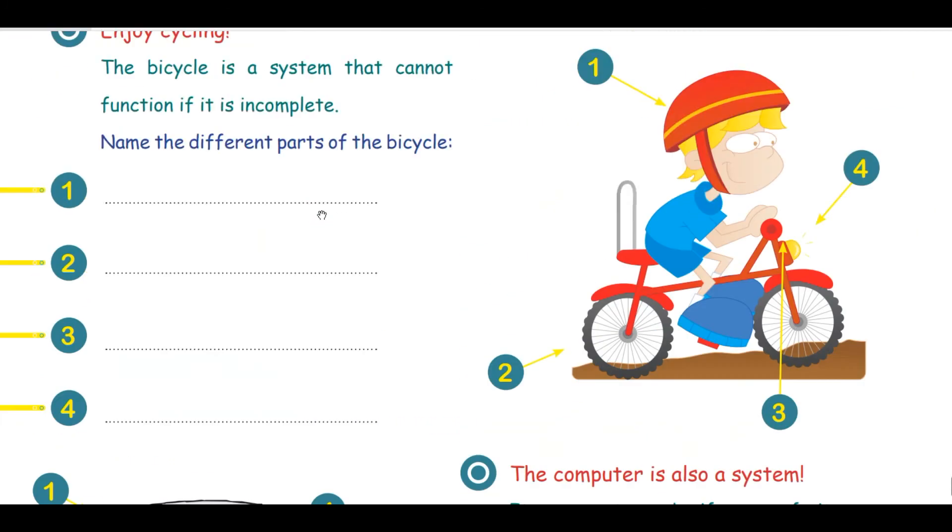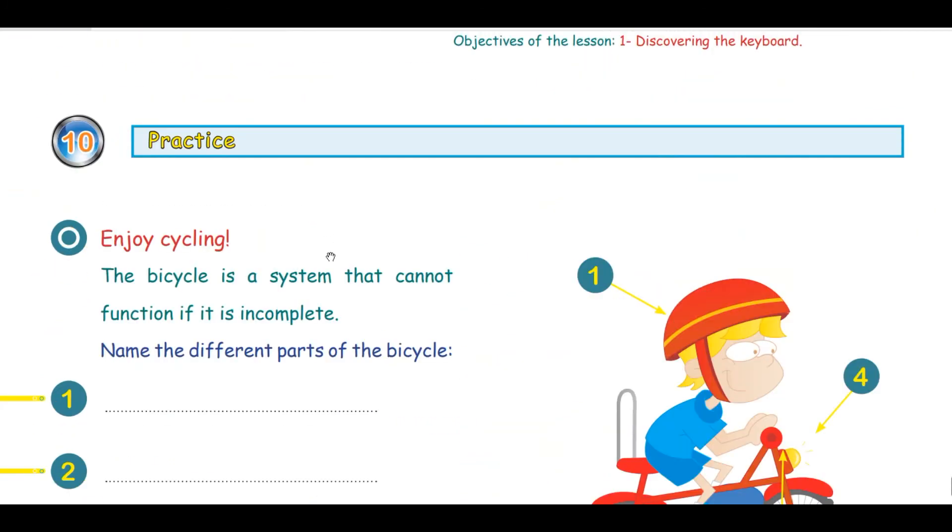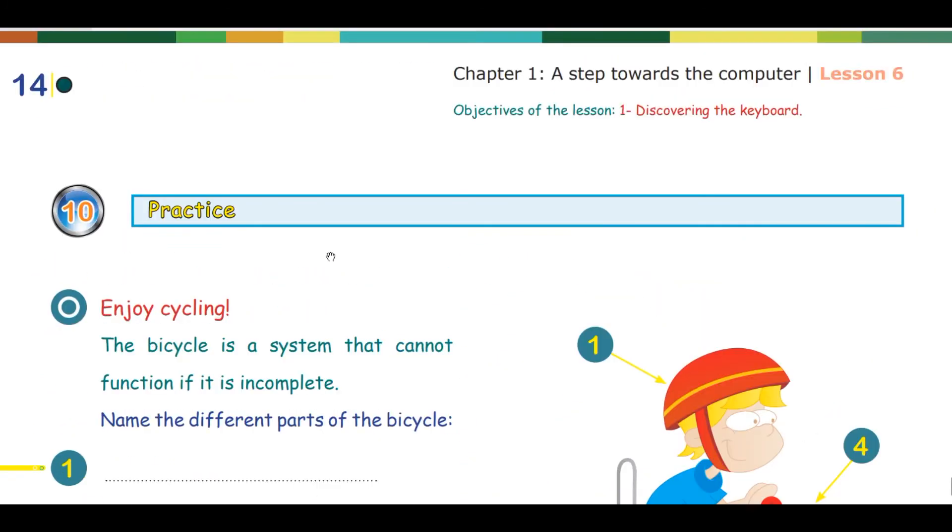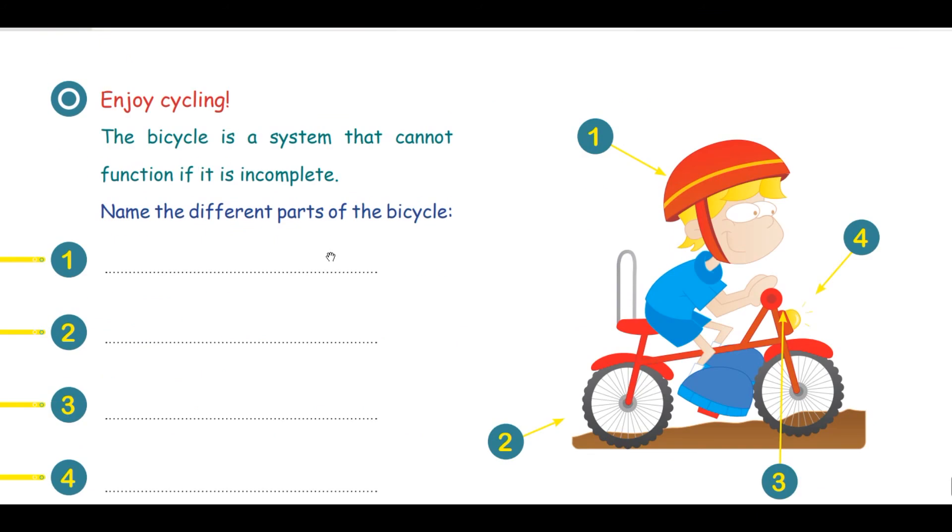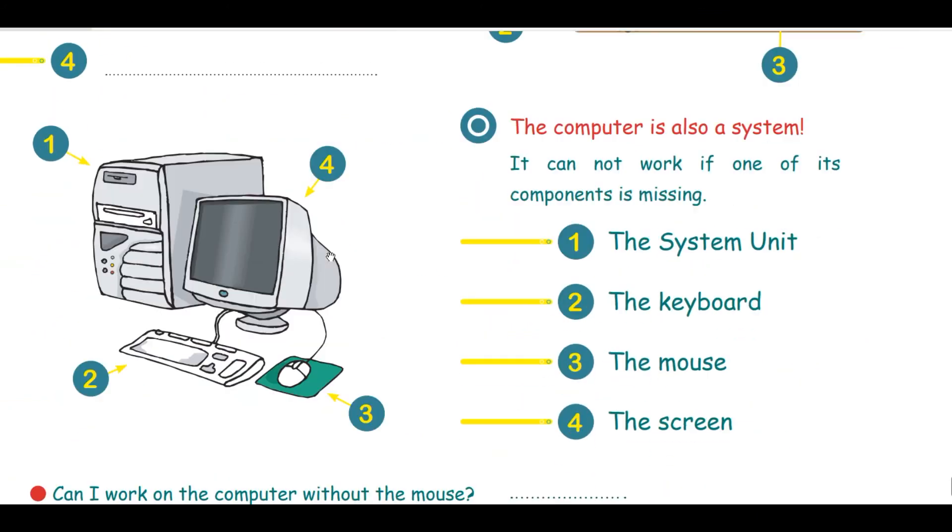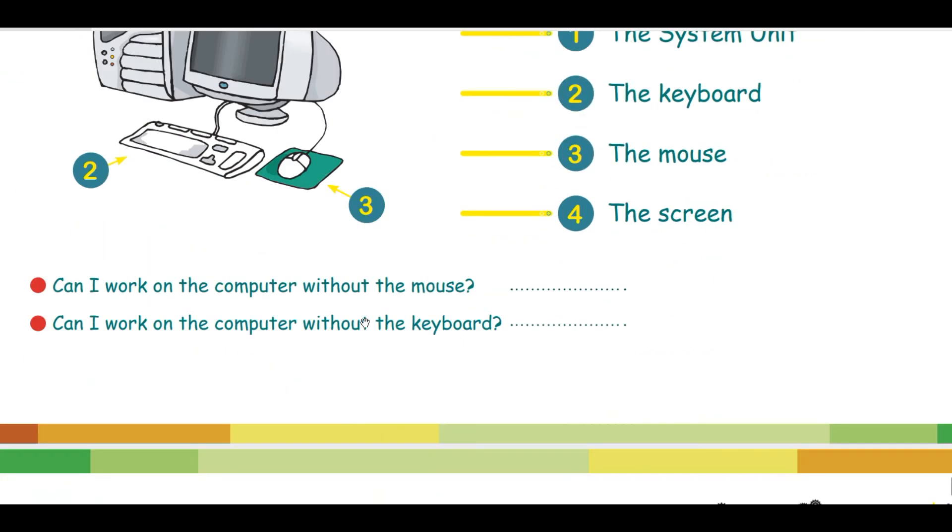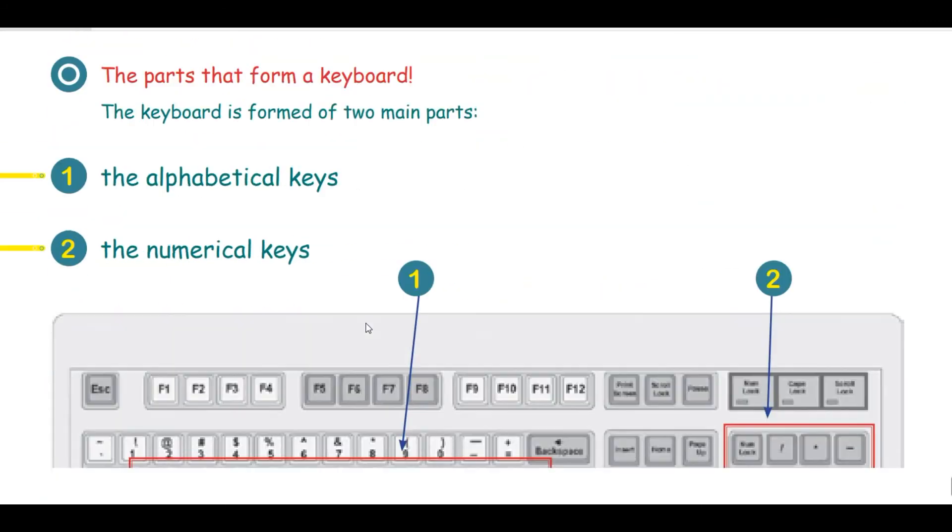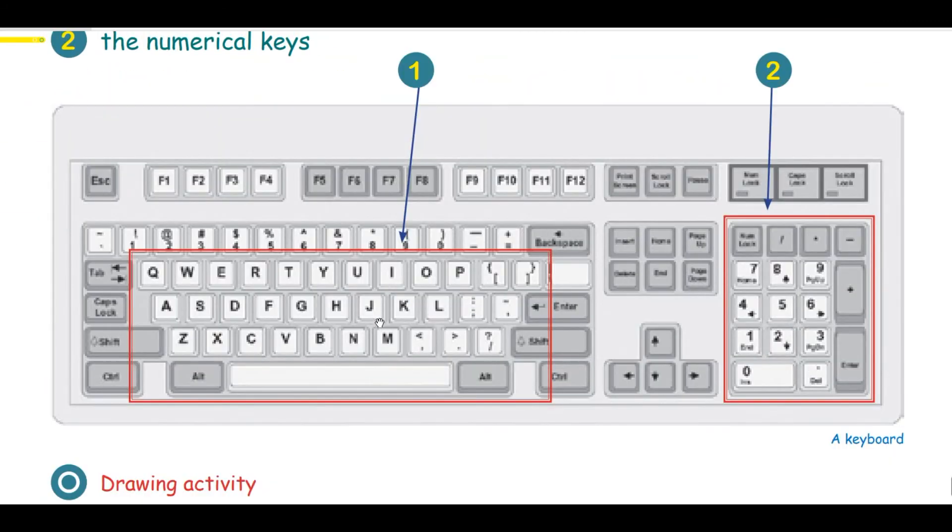To review: discovering what is a system, the components of a computer—the system unit, the keyboard, the mouse, and the screen—and practicing some activities on the keyboard by drawing or coloring some keys. Thank you.